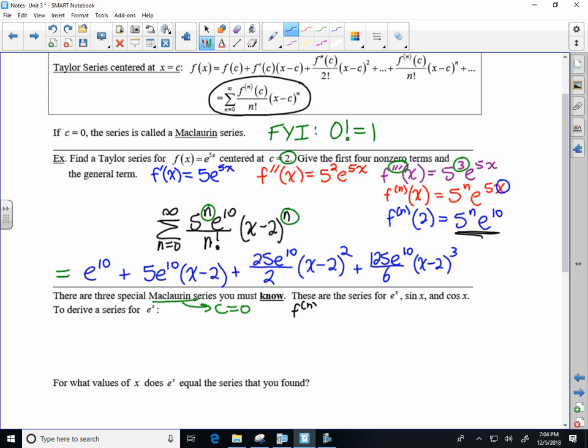So for e to the x, it's kind of asked and answered. We sort of did it already, but we wanted to define the entire series. So we do know that the derivative, the nth derivative of e to the x is going to be e to the x. We're not looking for any particular term of the series, so we want it in the most general form.